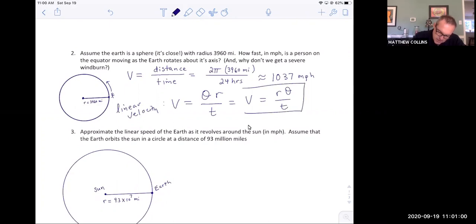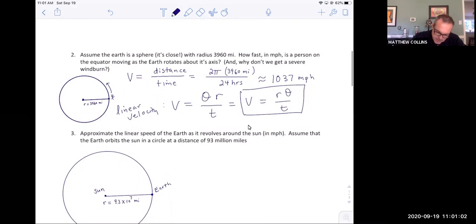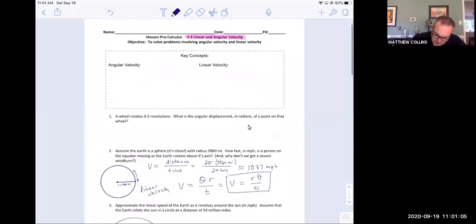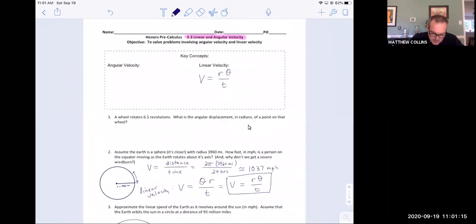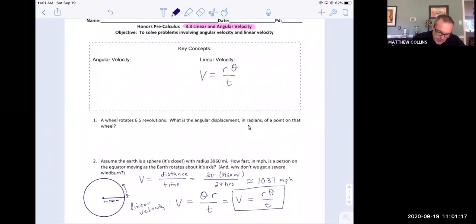That's my formula for linear velocity. So up here on my sheet where it says linear velocity, I'm going to type linear velocity denoted by capital V is R theta over T.